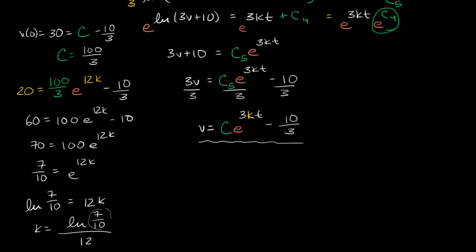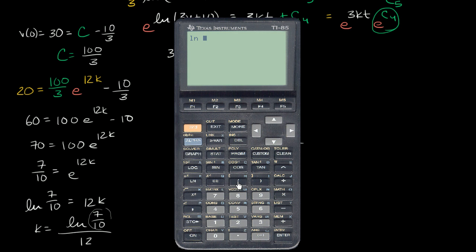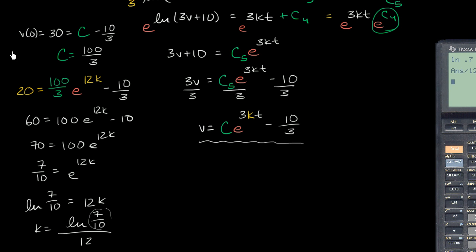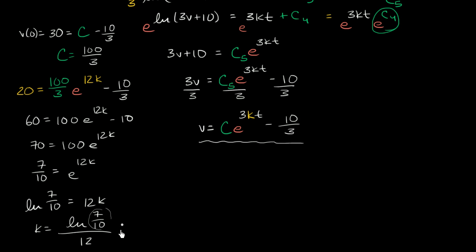Let me get my calculator out. We have the natural log of 0.7, divided by 12, which equals approximately negative 0.030. So K is approximately equal to negative 0.0297, or negative 0.030 rounded to the nearest thousandth. Now we can write our particular solution to model the asteroid as it's entering Earth's atmosphere.